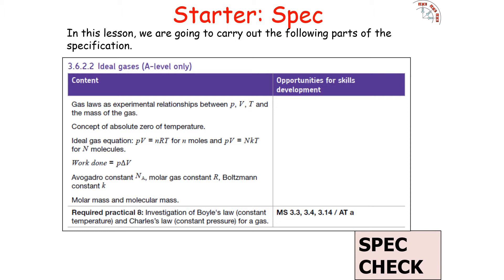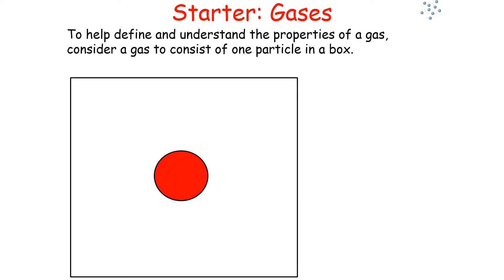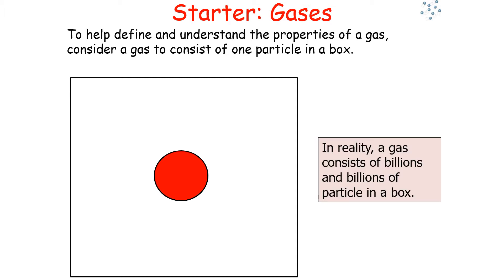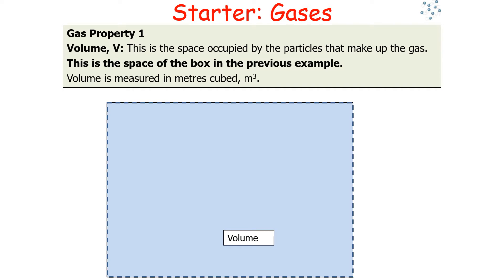We're going to be looking at specification 3.6.2.2, ideal gases. Now to help define and understand the properties of a gas, consider a gas to consist of one particle in a box. In reality, a gas consists of billions and billions of particles in a container. The first property of a gas is the volume, which we denote with the symbol V, which is the space occupied by the particles that make up the gas. The volume is measured in metres cubed.